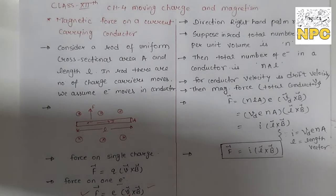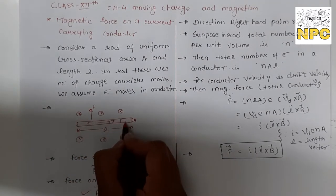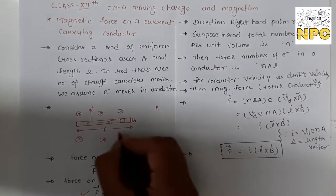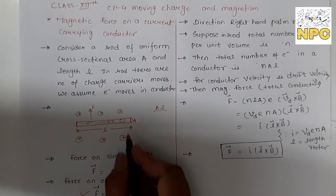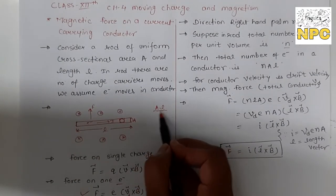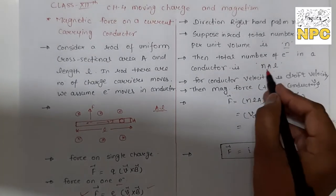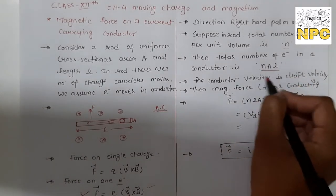But in this conductor there are many electrons — all the charge carriers. So for all the electrons and all the charge carriers, the force will be created and the total force is what we need to find. We suppose that this current-carrying conductor has n electrons per unit volume. The total volume is area A into length L, so total number of electrons is A into L into n.